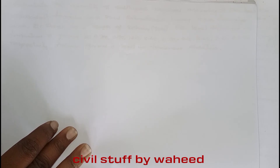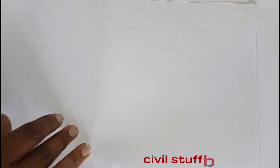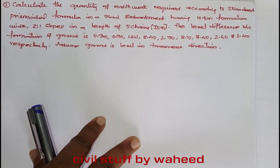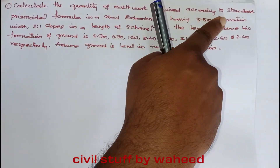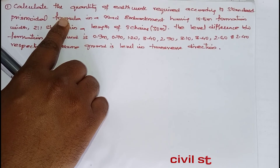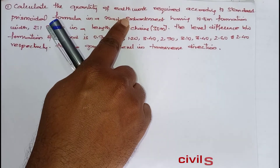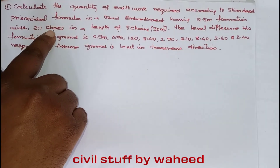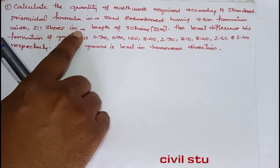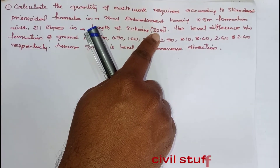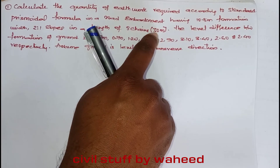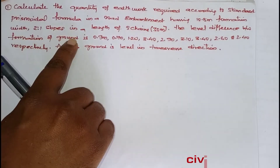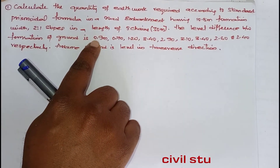This part covers problems by prismoidal and trapezoidal rule. The question is: calculate the quantity of earthwork required according to the standard prismoidal formula in a road embankment having 10.5 meters formation width and 2:1 side slopes, in a length of 8 chains where each chain length is 30 meters, giving a total length of 240 meters.